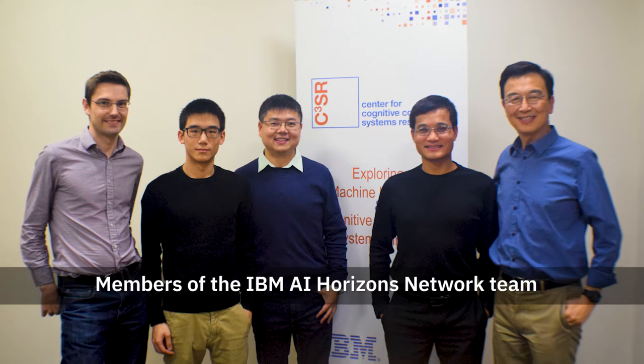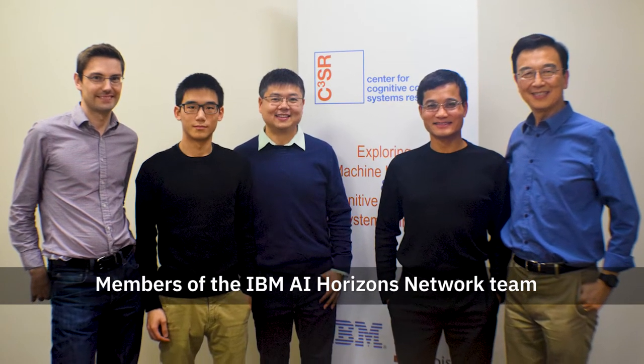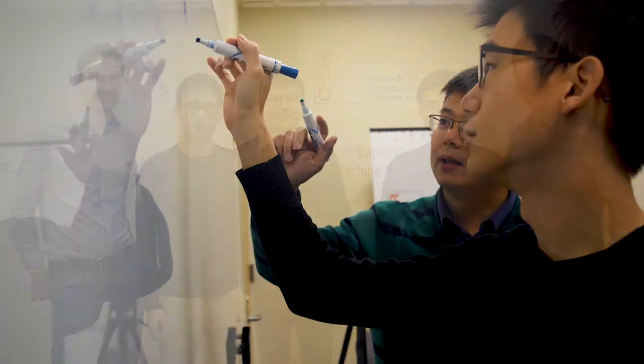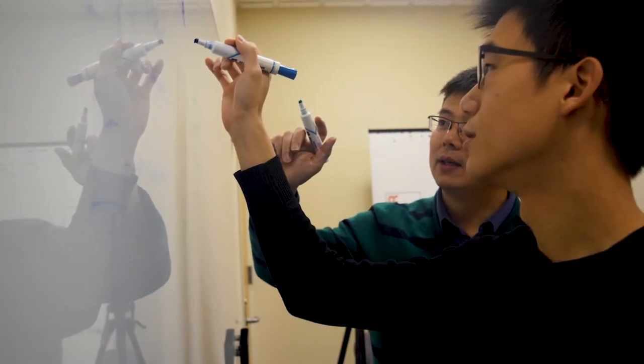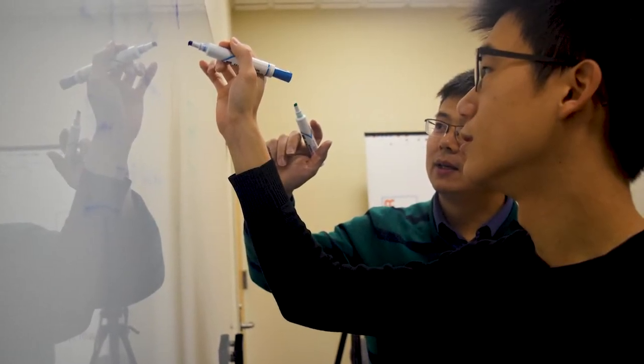We are going to present an oral paper titled Interpretable and Globally Optimal Predictions for Texture Grounding using Image Concepts. This paper is an excellent example of the close collaboration between IBM Research and the University of Illinois Urbana-Champaign through its Center for Cognitive Computing Systems Research.